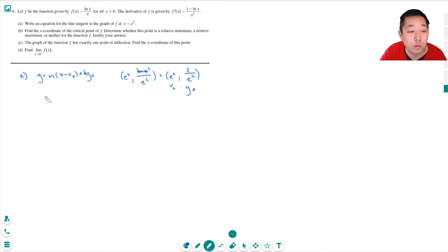Then I need to know what the slope is. m is equal to f prime at e squared. So that's 1 minus ln of e squared over the x value squared. That's e squared squared. ln of e squared is 2. So it's 1 minus 2 over e to the 4th. Because e squared squared, I multiply these two. That's negative 1 over e to the 4th. That's the slope. So the equation is y equals negative 1 over e to the 4th times x minus e squared plus 2 over e squared. That would be my equation.